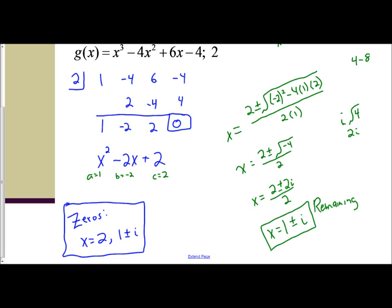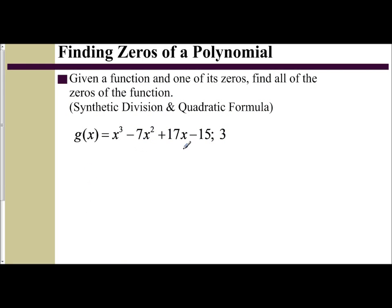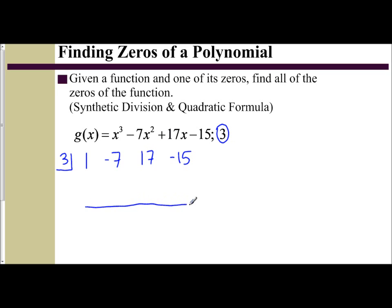Let's try one more example. Here we have x³ - 7x² + 17x - 15 as our function. We're given that one of the zeros is 3, so I'm going to use that — when I find all the zeros, that's one of them. So I'm going to do synthetic division with 3. I look at my exponents: they're decreasing with no gaps. So the factor theorem tells us we should get a remainder of 0.